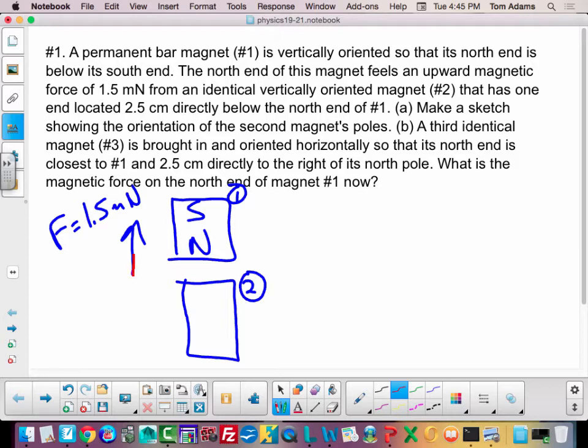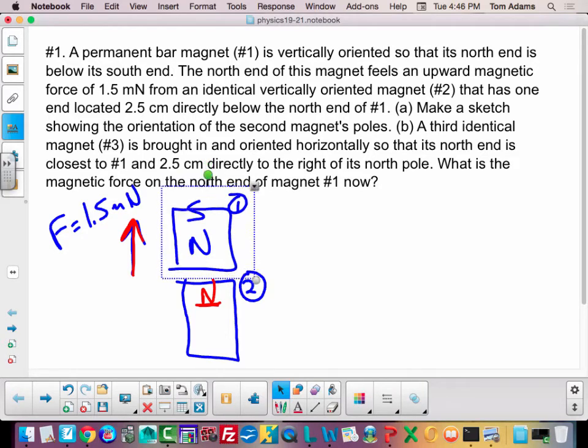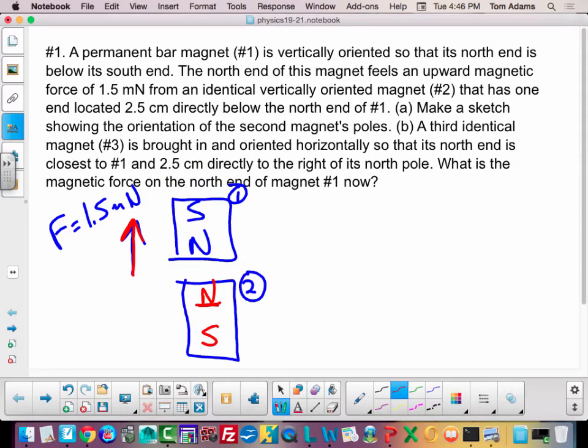Now the only way I can exert an upward force is if I have a like pole, because remember, like poles repel. Now, if this right here was the south pole, what would happen is it would attract, and in other words, it would want to pull this magnet down. But in order to push it up, there has to be a repelling, so they have to be similar poles. So that means that the orientation of the second magnet should be like this.